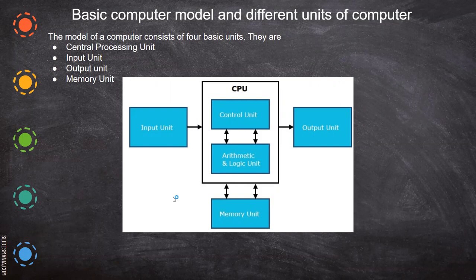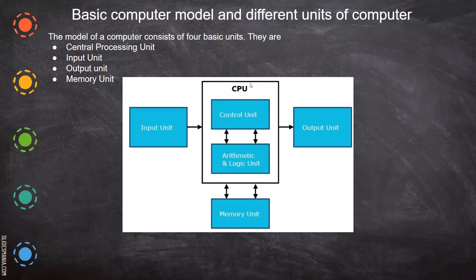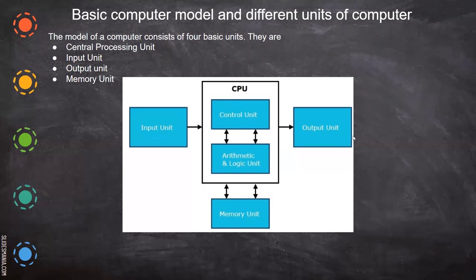A computer consists of an input unit and an output unit. Between them lies the central processing unit, which consists of a control unit and an arithmetic and logic unit, which are connected to a memory unit. The data flows from the input unit to the central processing unit — which is our microprocessor — and then information is sent to the output unit.